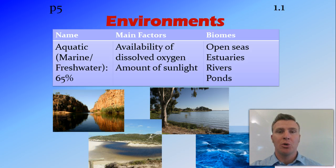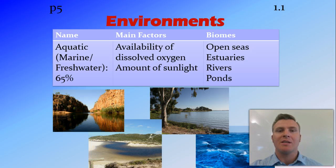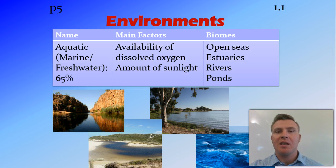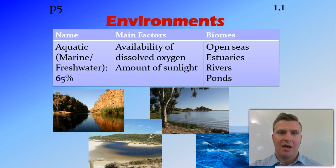Aquatic environments cover two-thirds of the world and fall into two categories: marine or freshwater. Marine means ocean — so salty — and freshwater is fresh. Some of the important factors in this environment include the availability of dissolved oxygen, as well as the amount of sunlight penetrating through the water, and we'll look at that in more detail in later videos. Some of the biomes found in an aquatic environment include estuaries, rivers, ponds, and open seas — all very different biomes depending on those abiotic factors.